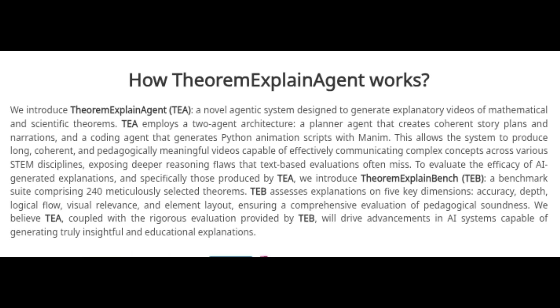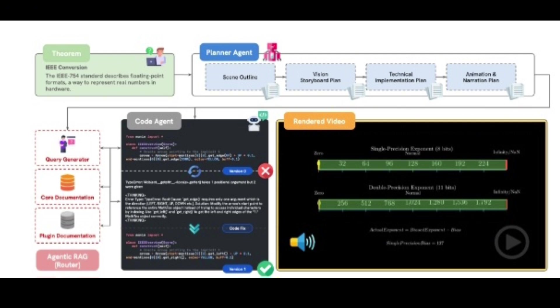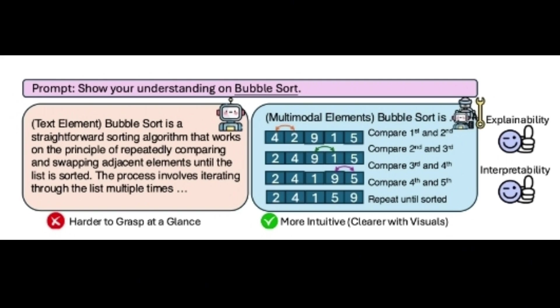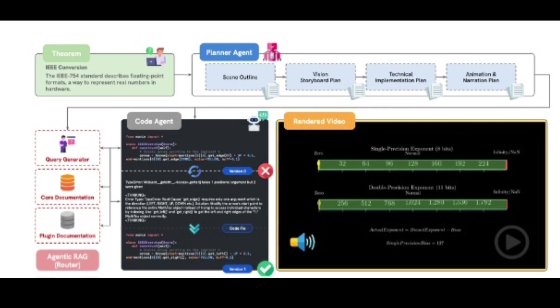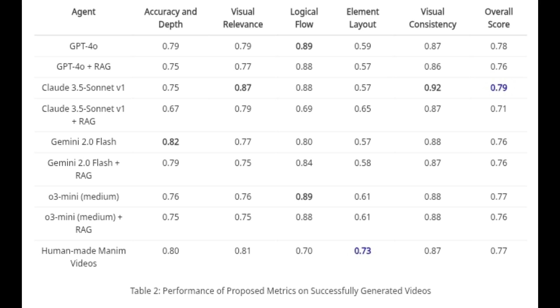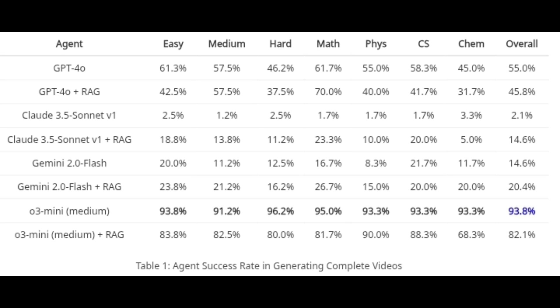How does it work? Theorem Explain Agent has two agents: a planner agent and a coding agent. The planner agent takes the input theorem, understands it, breaks the explanation into logical steps, creates a story plan or script, and generates the narration text — it figures out what to explain and in what order. The coding agent takes the plan and narration from the planner, translates these into actual Python code using the Manim library (a powerful animation library) to create the visual elements of the video, then merges it with a high-quality voiceover. For the planner agent, they tried many AI models but the success rate for overall performance is low on most. GPT-4o gets 55%, Claude 3.5 Sonnet gets below 20%, and even Gemini 2.0's score is low — understandable, since these are base models.